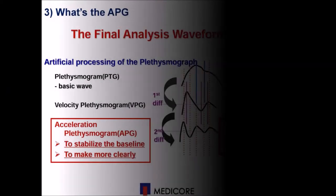In the plethysmograph analysis method, we use the character pulsation, plethysmograph, and accelerated plethysmograph. Once we detect the pulse wave patterns, we apply a second differentiation on the basic plethysmograph. If we use the mathematical equation, it will be easier to look at the pulse wave turning points.